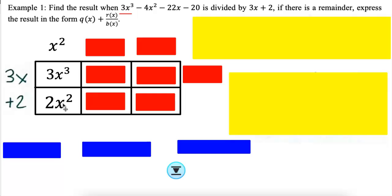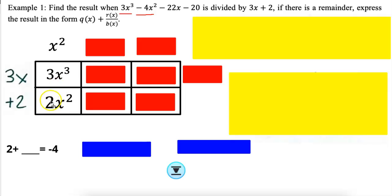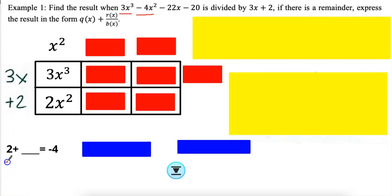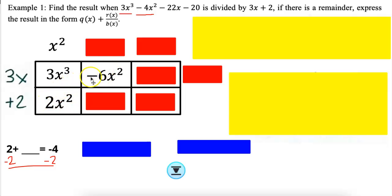Now comes the difficult part. I want a negative 4x squared in my problem. I have a 2x squared, so I have to force something in the diagonal. If you're not great at mental math, just do the opposite: negative 4 minus 2 is negative 6. So if I put a negative 6 in the diagonal, these are going to simplify because 2 minus 6 is negative 4, and that's what I wanted.